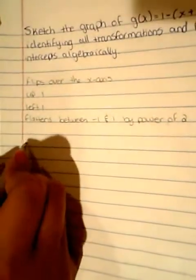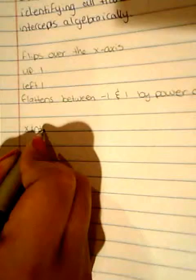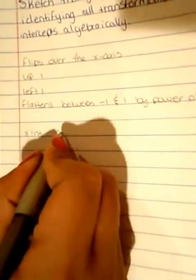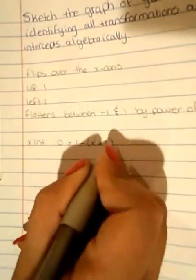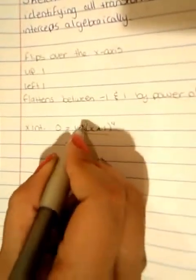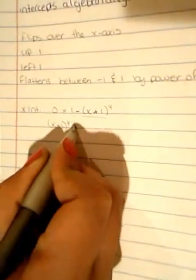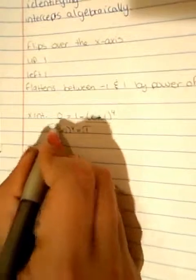And then let's find the intercepts. First we're going to find the x-intercept. We'll make the equation equal to 0, so it's going to be 0 = 1 - (x+1)^4. And then we're going to move this 1 to the other side so we get rid of the negative sign. So it's going to be (x+1)^4 = 1. And then we're going to take the root of both sides.